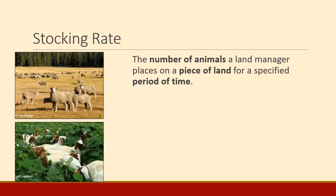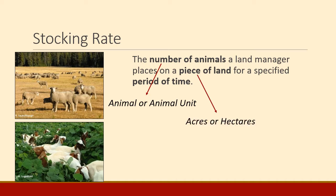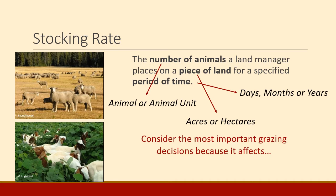Stocking rate is a little bit different. Stocking rate is the number of animals a land manager decides to put on the land for a period of time. Sometimes they decide to stock less than carrying capacity, sometimes more. It has three elements: a number of animals usually expressed in animals or animal units, some area of land usually expressed in acres or hectares, and some amount of time — days, months, years.